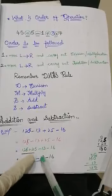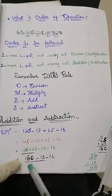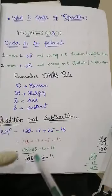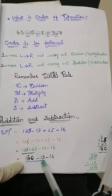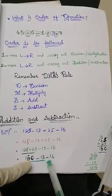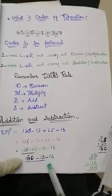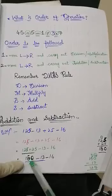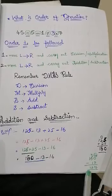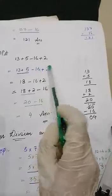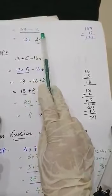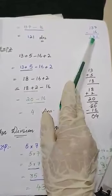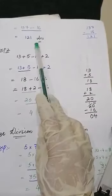We have 150, minus 13, and minus 16. Now we solve step by step. First: 150 minus 13 equals 137. Then: 137 minus 16 equals 121. So the answer is 121. This question is solved using only the operations of addition and subtraction.